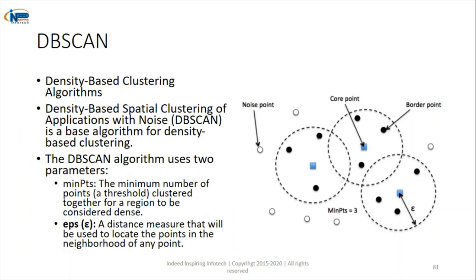The thirty-third algorithm is DBSCAN — Density-Based Spatial Clustering of Applications with Noise. It works on density. Two important parameters are min points — the minimum number of points clustered together for a region to be considered dense — and epsilon — the distance measure used to locate points in the neighborhood of any point. If the distance is within epsilon, it is a neighbor; if greater, it is not.